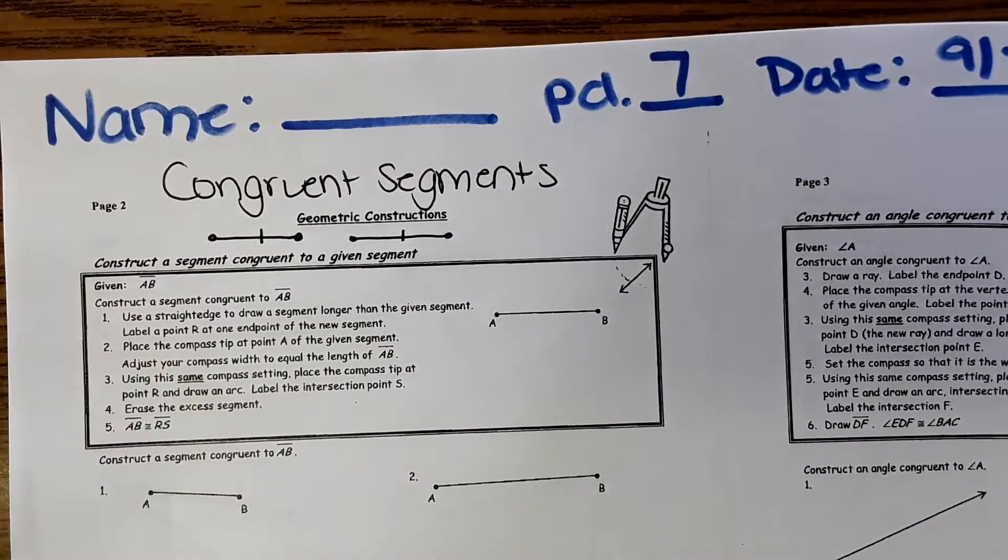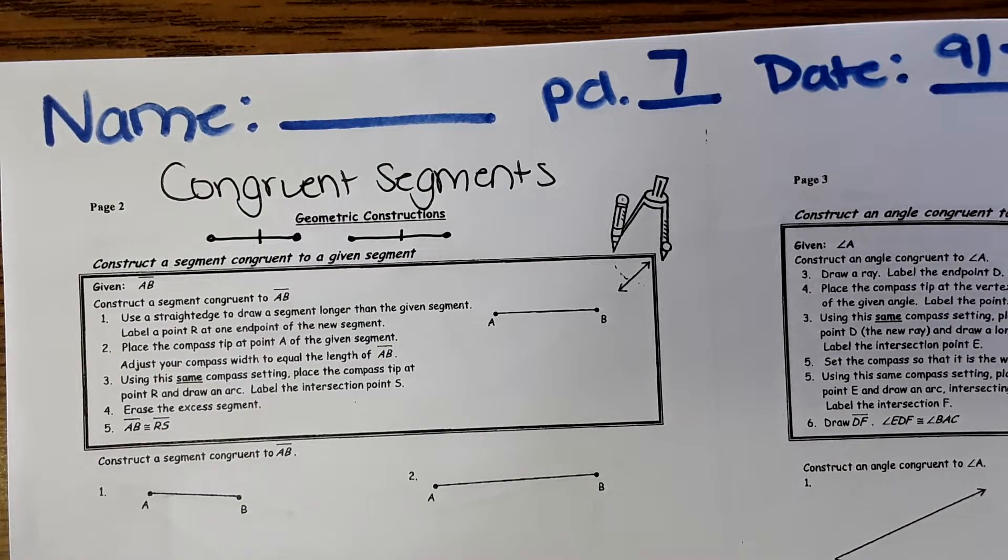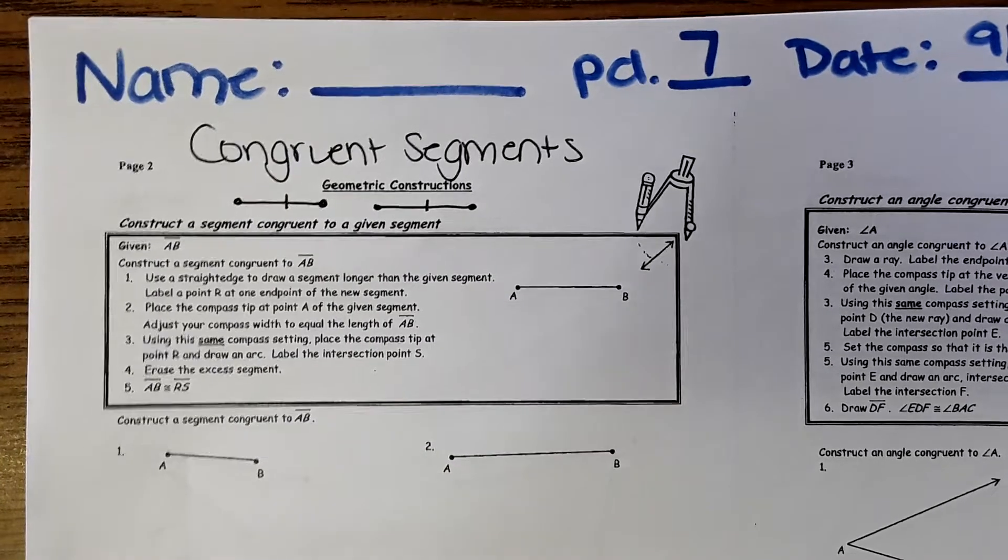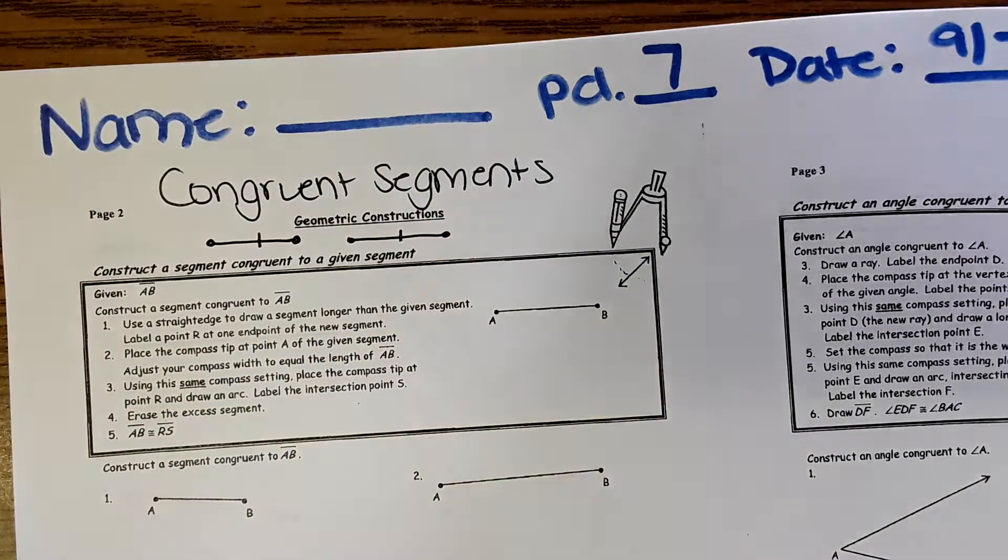By the way, if you have trouble with printing from Schoology, try downloading the document first then printing it, because sometimes through Schoology the formatting gets messed up. Okay, so we have segment AB right now, right here.